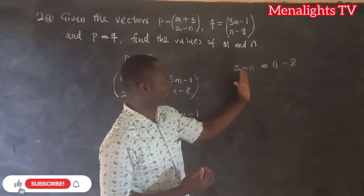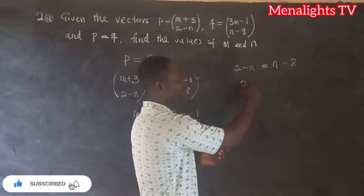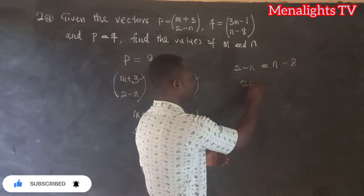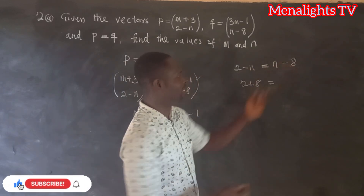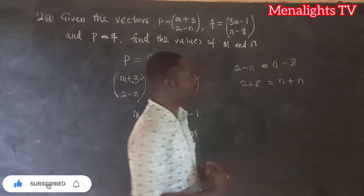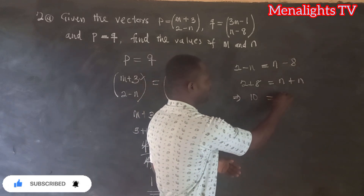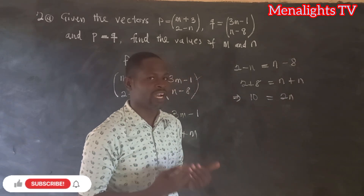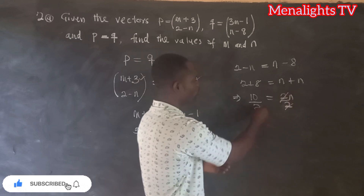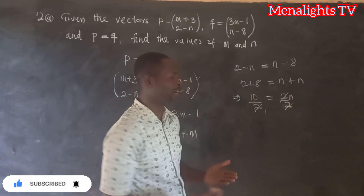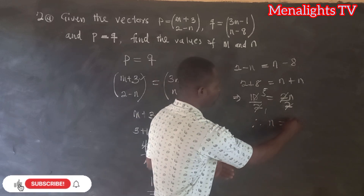Now we find n using the y-components: 2 − n = n − 8. Moving the 8 to the left and the n to the right: 2 + 8 = n + n, so 10 = 2n. Dividing both sides by 2, we get n = 5.